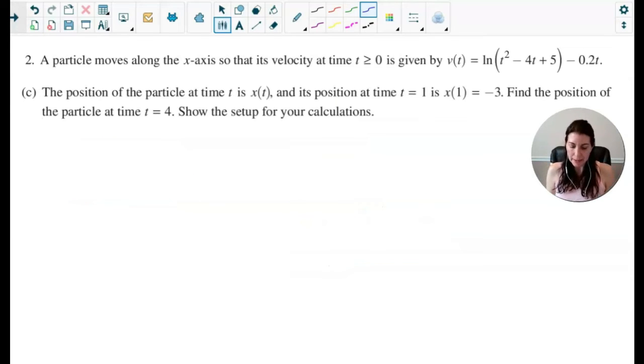All right, moving on to part C. The position of the particle at time t is shown by x(t) and its position at time 1, x(1), is negative 3. Find the position of the particle at t equals 4 and show the setup. So we want to find the position of the particle at 4. We would need to first think about the position at 1 and then add on the change in position from 1 to 4 of v(t)dt.